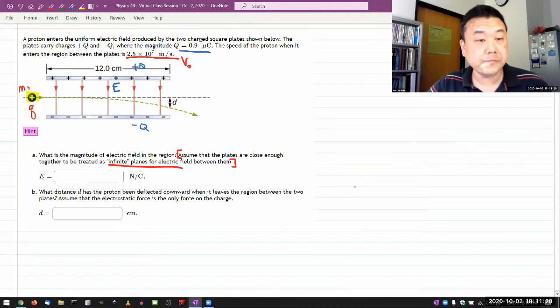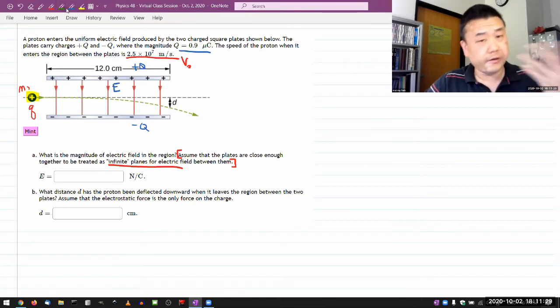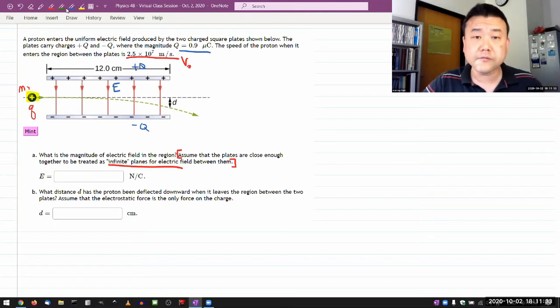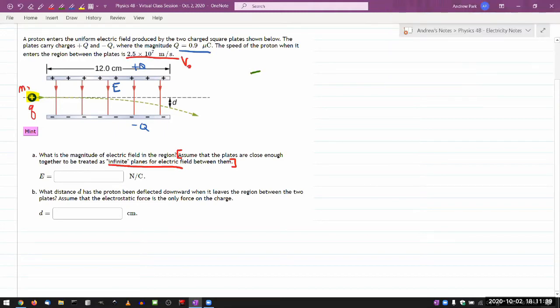Part A asks: what is the magnitude of electric field in the region? Okay, I think this hint here is important. Assume that the plates are close enough together to be treated as infinite planes for electric field between them. So this is where it's helpful if you remember the formulas for electric fields.